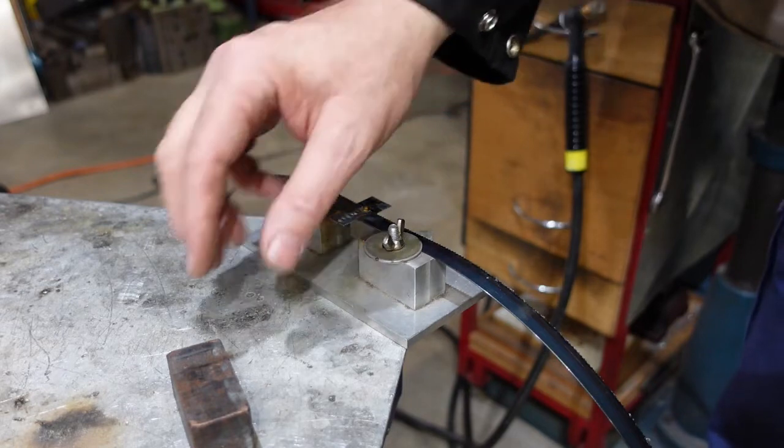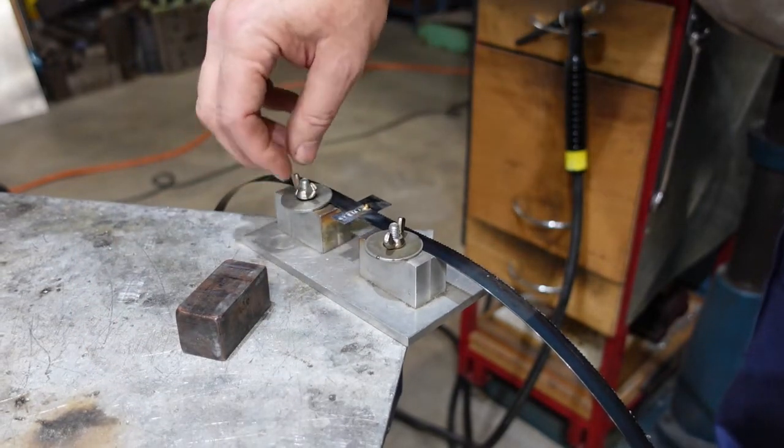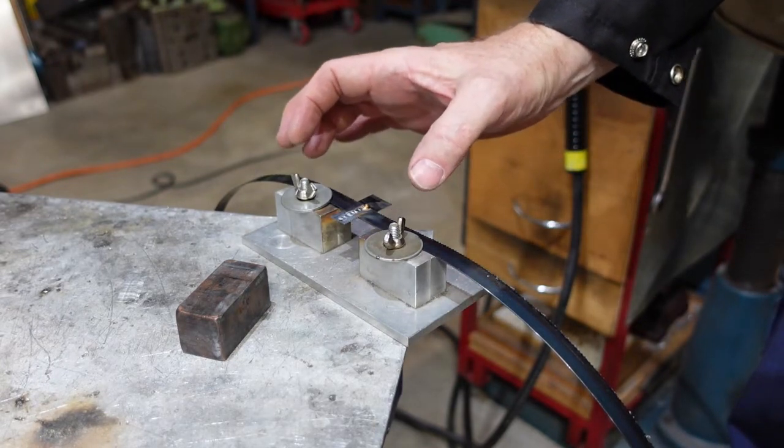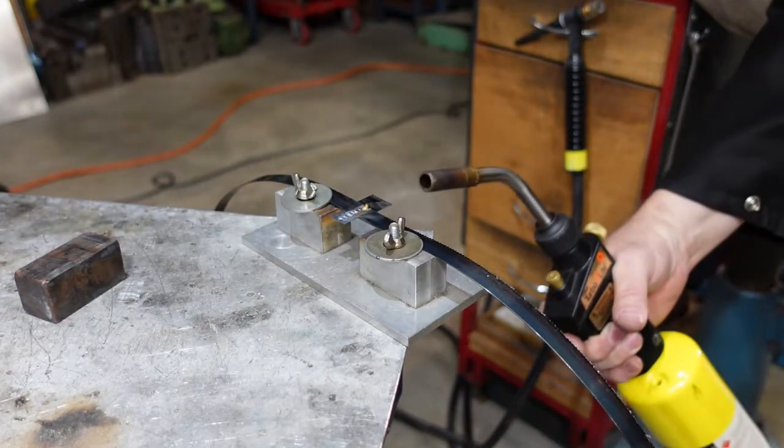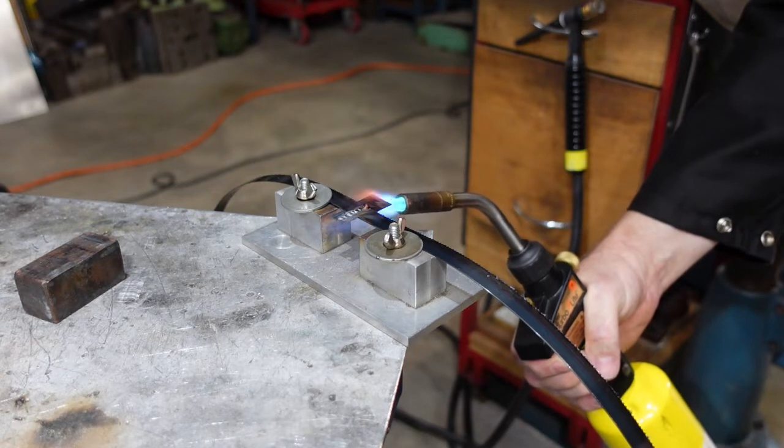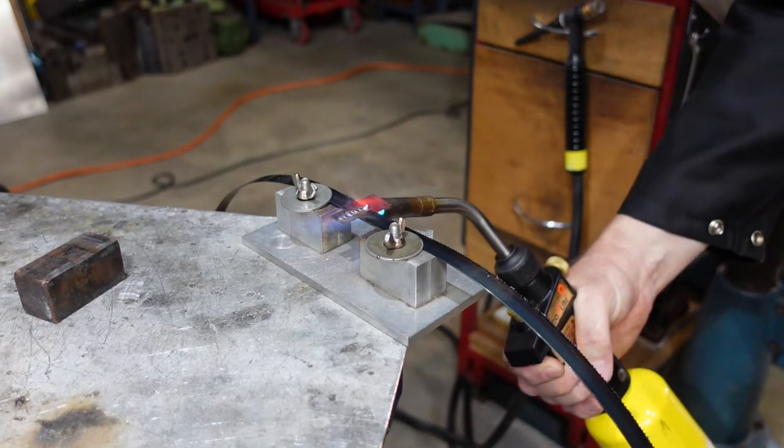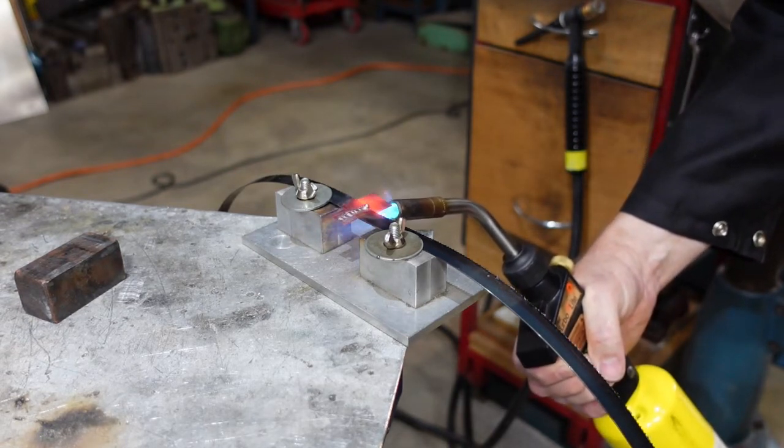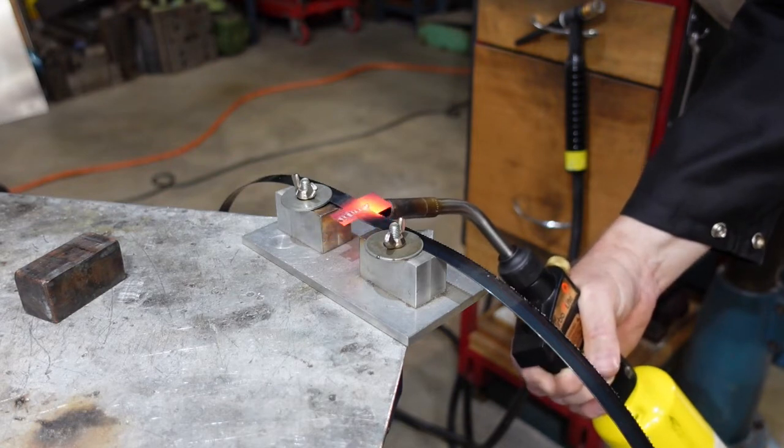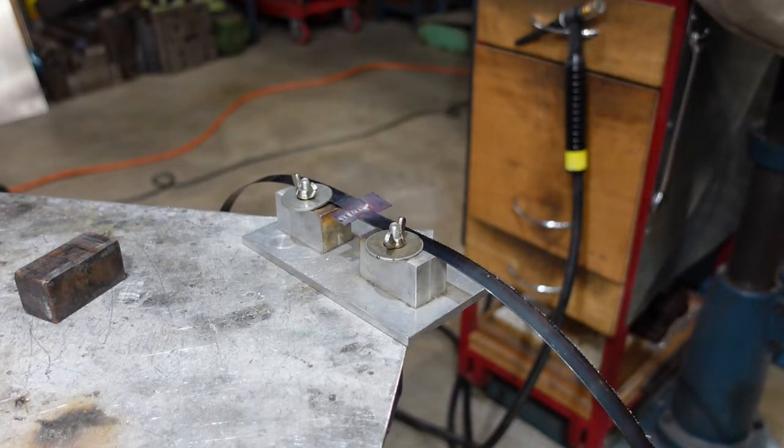Once welded, the joint needs to be annealed. I've slipped the copper block out and then I'm going to loosen off one of the clamps here so that if it wants to expand while it's being heated up it can. I just take it up to red heat and then just let it cool like that. I'll then take that out and do the next.